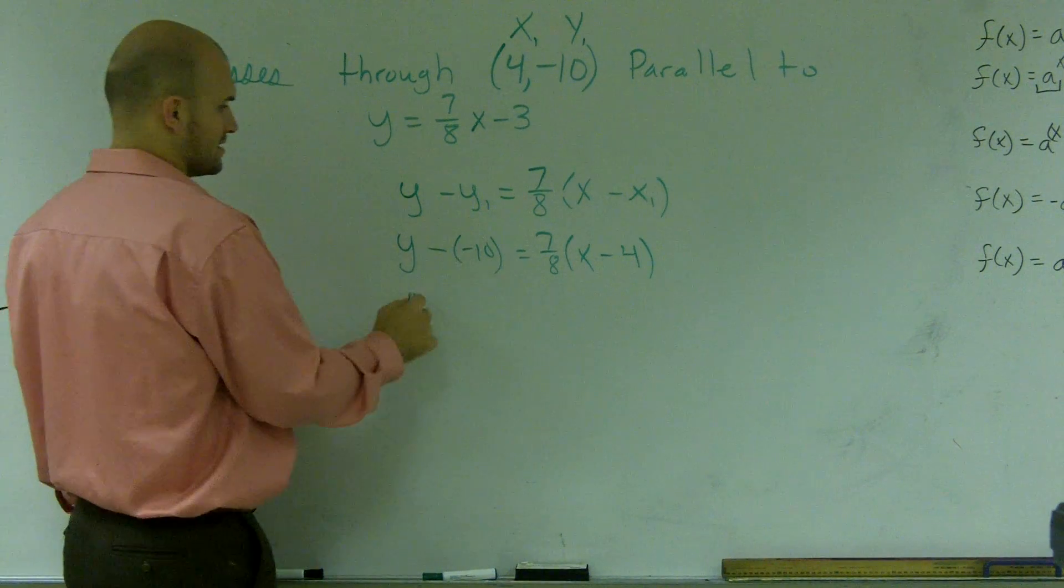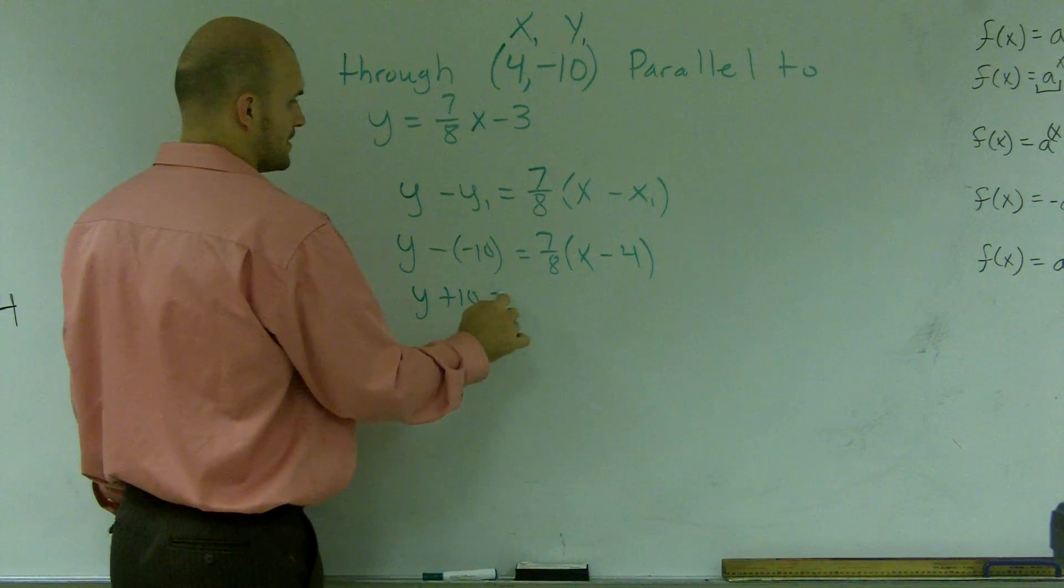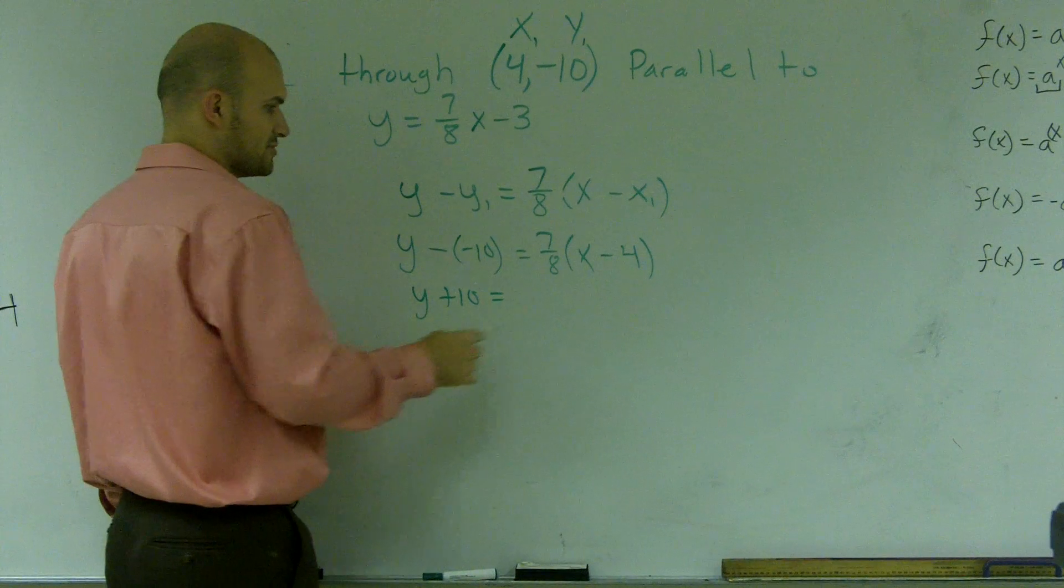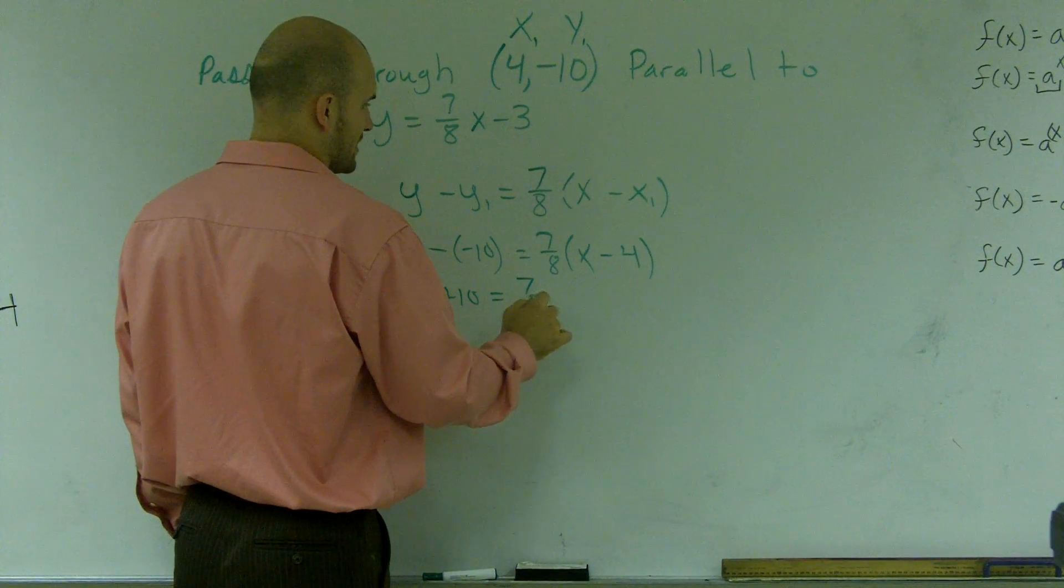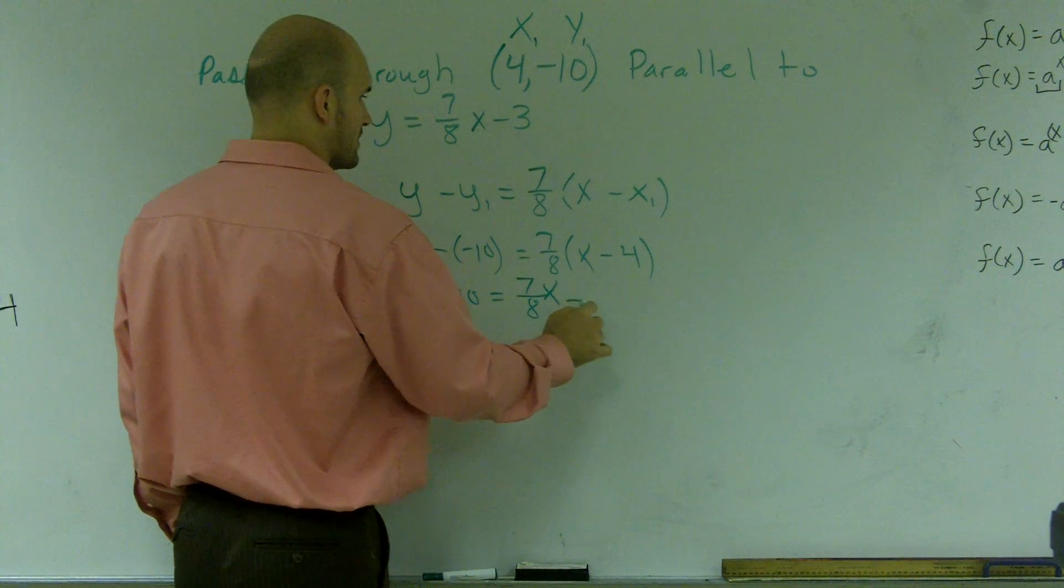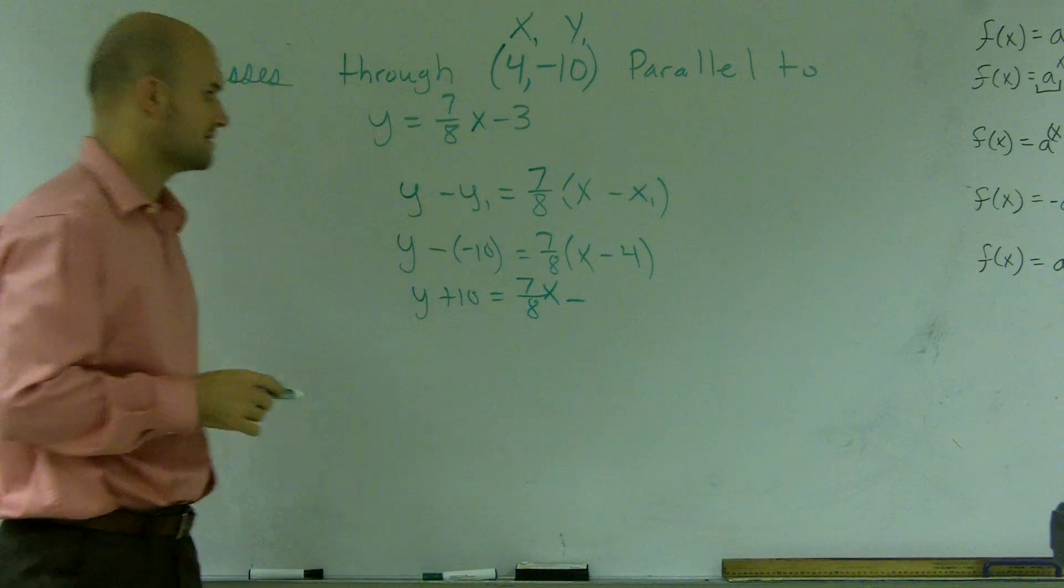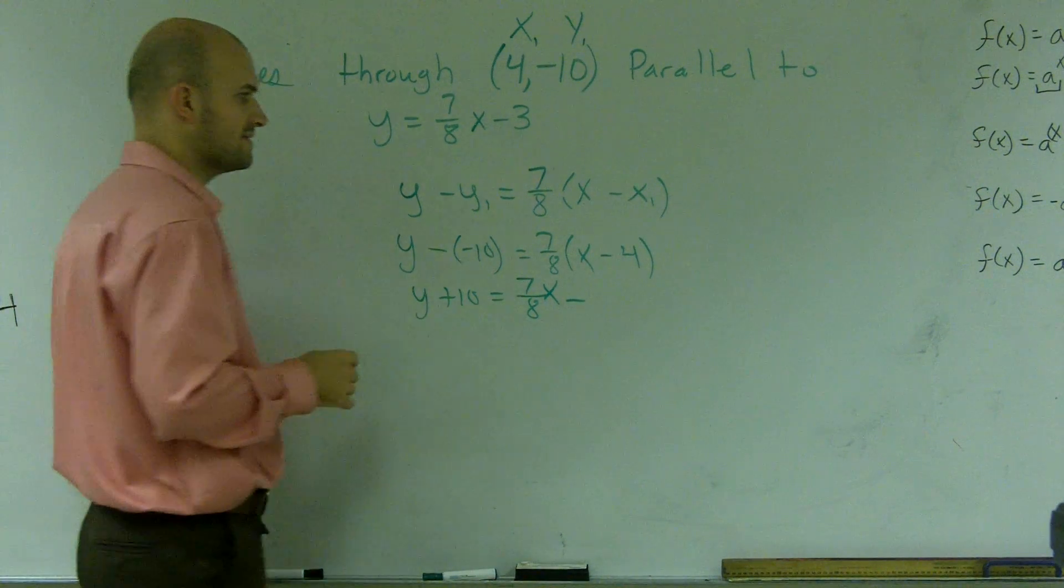And then what I'm going to do is combine this: y plus 10 equals, using the distributive property, 7/8x minus, and let's see, this is going to cancel out so it will be 7/2.